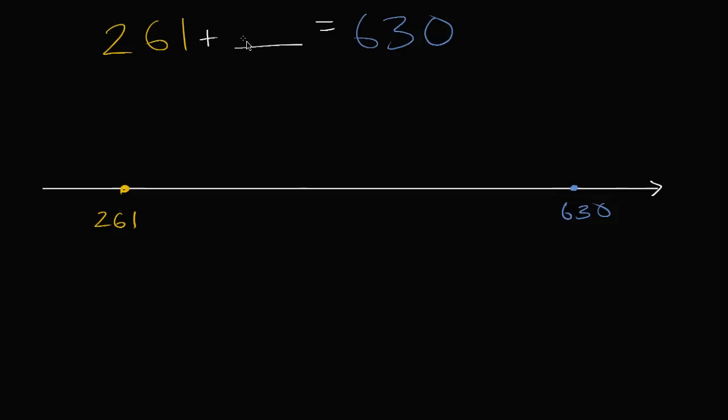And the amount that I add is going to be the blank. So let's see what I have to add to get to 630. And I'm gonna add numbers that are easy for me to compute. So I could add nine. Now why did I add nine? Because that gets me to 270, which is a nice round number.